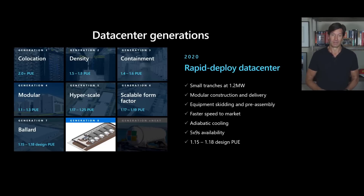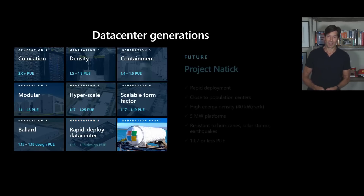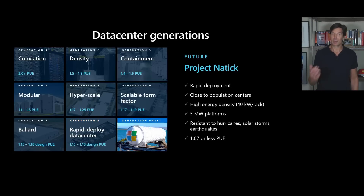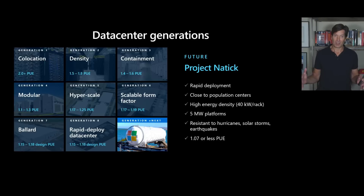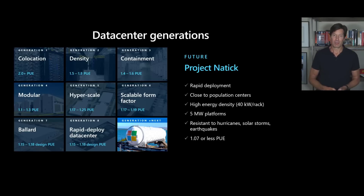We're going to go even further. We're exploring getting to PUEs of 1.07 or less, and the path we see to that is Project Natick — a joint effort between Microsoft Research and Microsoft Azure. The idea is that we take cylinders, seal them, evacuate the air, refill them with inert nitrogen gas, and drop them on the ocean floor. This has a number of different benefits.